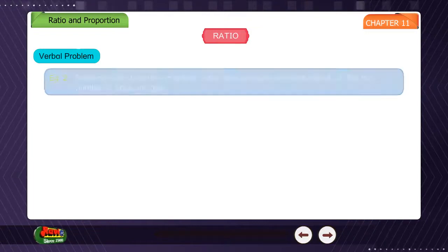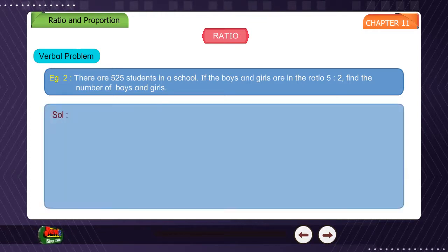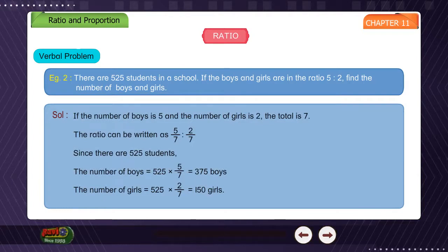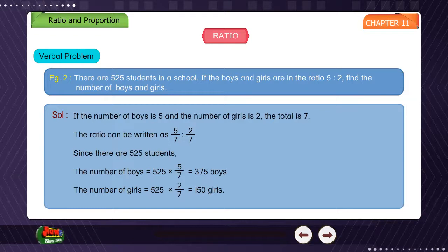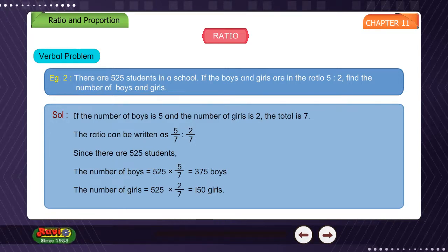Verbal Problem. Example 2: There are 525 students in a school. If the boys and girls are in the ratio 5 is to 2, find the number of boys and girls. If boys is 5 and girls is 2, the total is 7. The ratio can be written as 5 by 7 is to 2 by 7. Since there are 525 students, the number of boys is 525 multiplied by 5 by 7 equals 375 boys. The number of girls is 525 multiplied by 2 by 7 equals 150 girls.